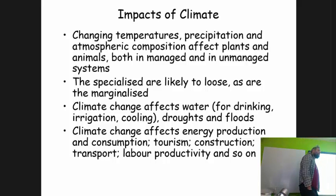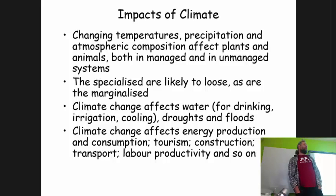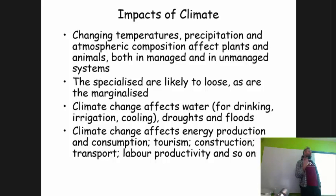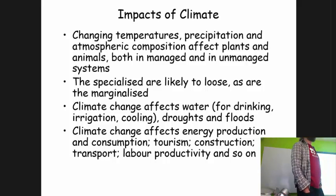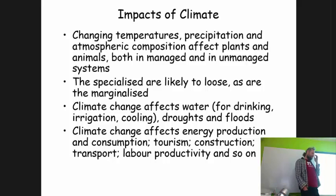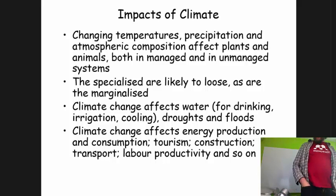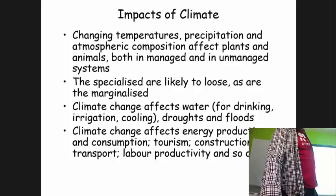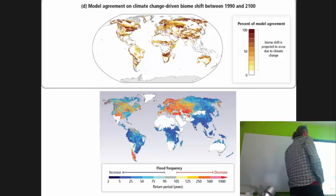One way of picturing this is to see yourself driving in a car from, say, the Netherlands down to Spain. You would see the vegetation slowly change around you. Plants that grow happily in England would be less happy growing in Spain, and vice versa, because temperature is different, rainfall is different, radiation is different. In the future, these things would be different in the same location, and then you would expect a different ecosystem there.